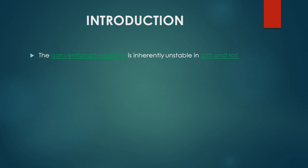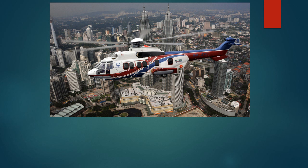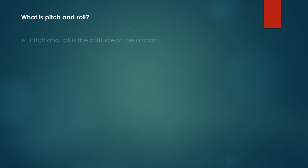The conventional helicopter that we see today is inherently unstable in pitch and roll movement. So now I will explain about what is pitch and roll. This is the example picture of conventional helicopter. Pitch and roll is the attitude of the aircraft, or we can call it the movement of the aircraft.